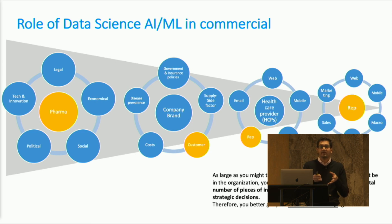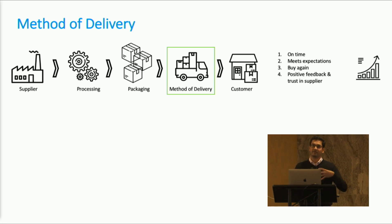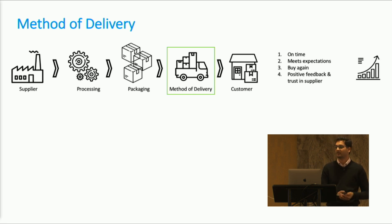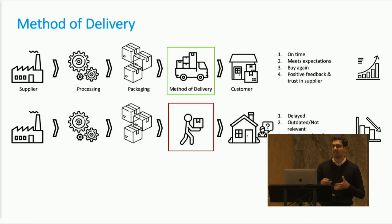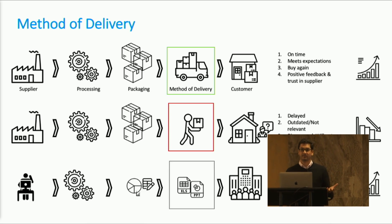It's very important for your team to get the method of delivery right. Here's an analogy: if you're a supplier of a product, you spend a lot of time processing, packaging, and creating the right optimized package, then you choose a method of delivery — your truck — to deliver that package to your end customer. When you choose the right method of delivery, your product arrives on time, meets expectations, you have positive feedback and trust, and that results in positive growth.